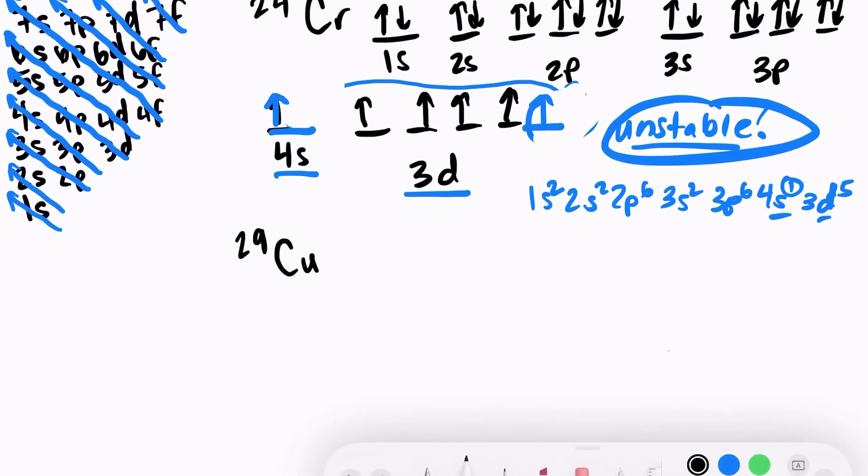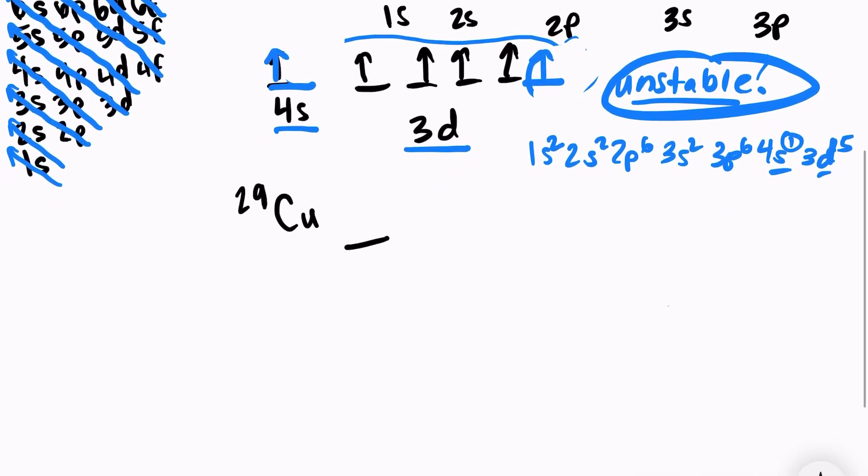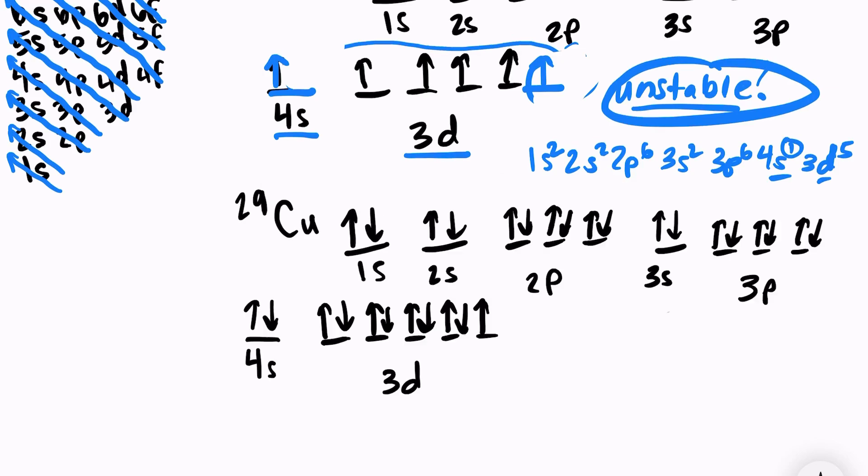Copper is very similar. Let's look at the orbital diagram for copper. Here's the electron configuration for copper. You can see we have almost a fully filled 3d sublevel, but we have one electron here that is unpaired, one unpaired electron when every other 3d orbital is paired. So this is also highly unstable.